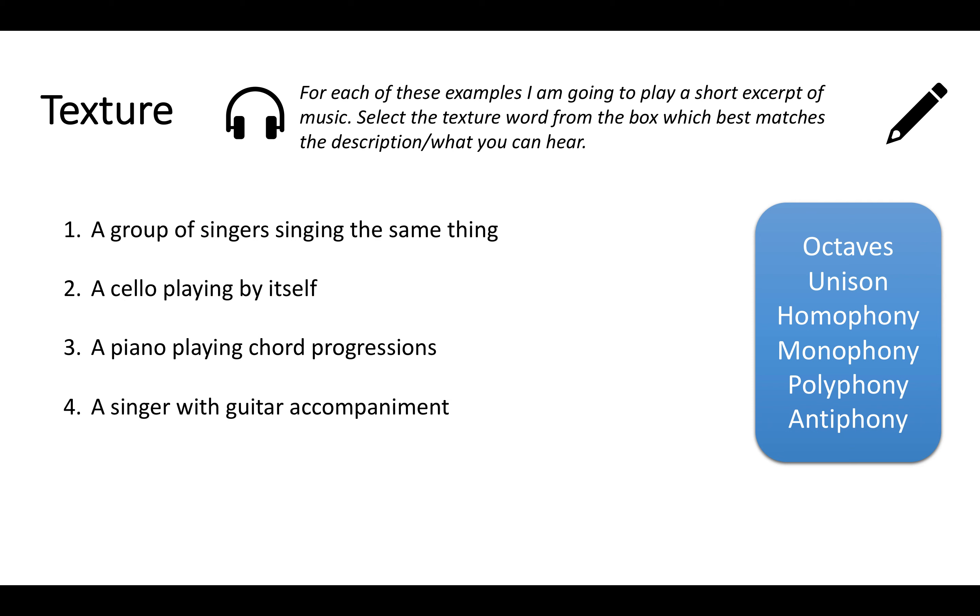So hopefully you've selected four different texture words from the box to describe those different excerpts that I played. Let's go through the answers now. So a group of singers singing the same thing is called singing in unison. It's when you're all singing together. A cello playing by itself is monophony. Mono means one, so there's only one layer and that cello is playing in monophony. A piano playing chord progressions is homophony because chords provide harmony because there's different notes at the same time. And anything with harmony is described as homophony.